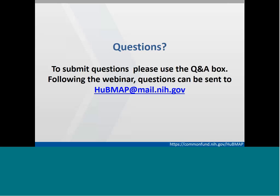Molly asked: for the UG3 phase, how should tissue types for proof-of-concept studies be prioritized? For transformative technology development projects, we're looking for performance characteristics of the technologies, so tissue types should be chosen to best show off their performance. If you're choosing a mammalian tissue type for the UG3 phase, consider how that translates to human tissue for the UH3 phase — we're looking for something that clearly makes sense in that transition.